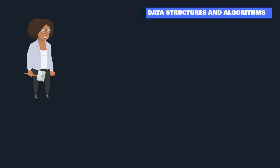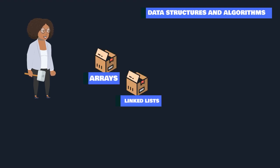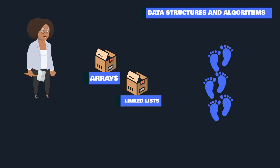As we embark on this journey, let's start with the building blocks of data science: data structures and algorithms. Imagine data structures as the different containers that hold data, like arrays and linked lists. Algorithms, on the other hand, are step-by-step procedures for solving problems. To master the fundamentals of data science, you need to be familiar with data structures and algorithms.